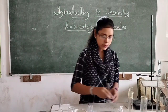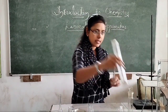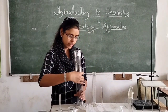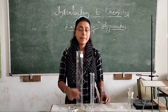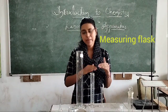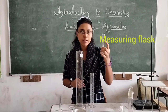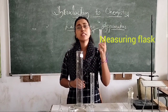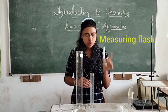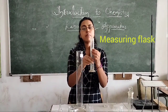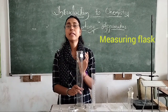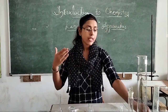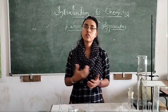Next we are going to see some measuring flasks — a smaller one, a bigger one, and an even bigger one. These are measuring flasks of different measurements. This one is a measuring flask of 10 ml; if you need 10 ml of any solution you can measure it with this. This one is a 100 ml measuring flask, and this one is a 500 ml measuring flask, which we use in different experiments to make solutions and to have a definite amount of solution.